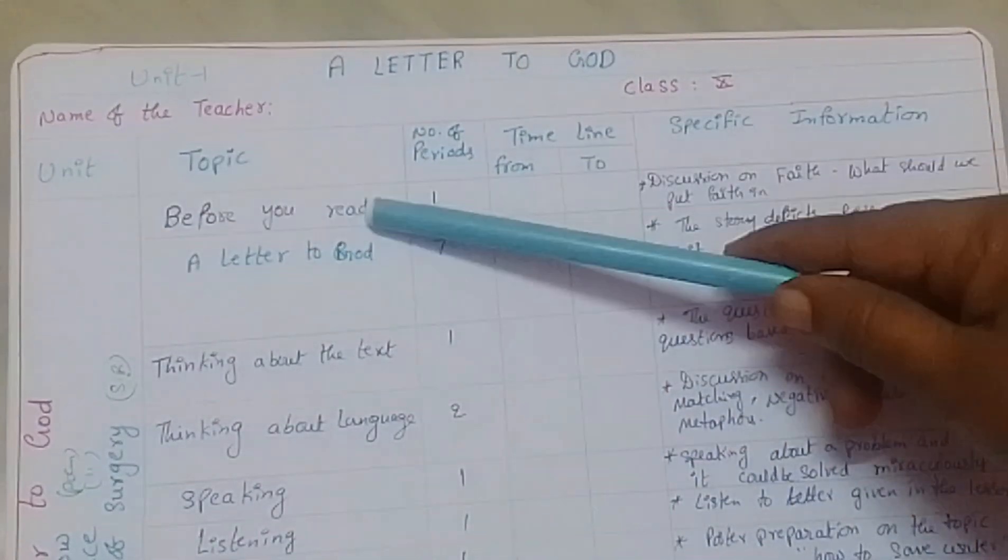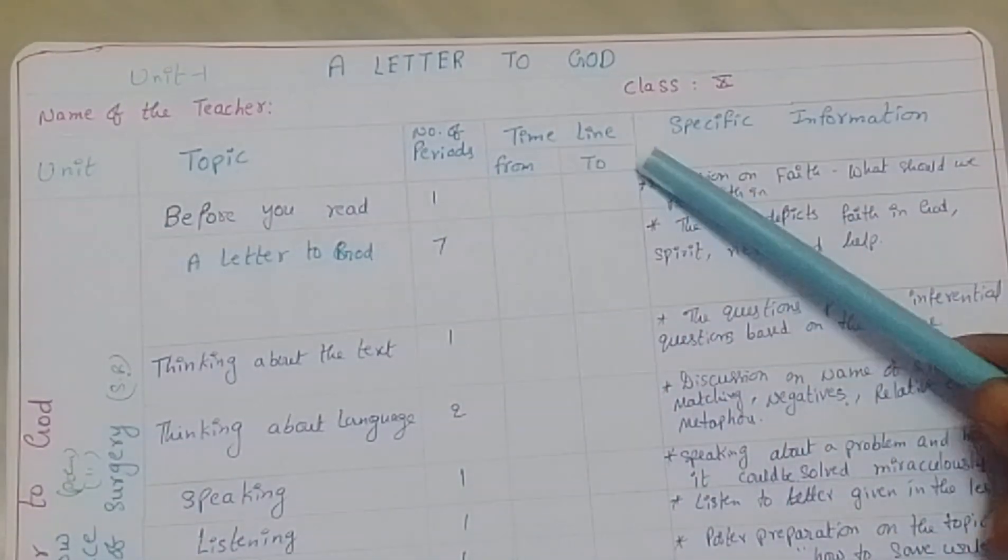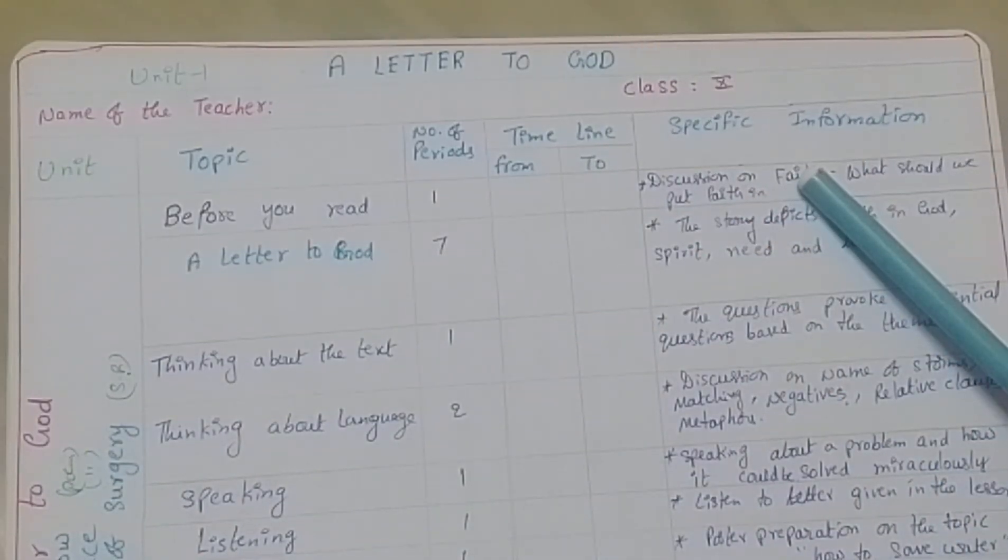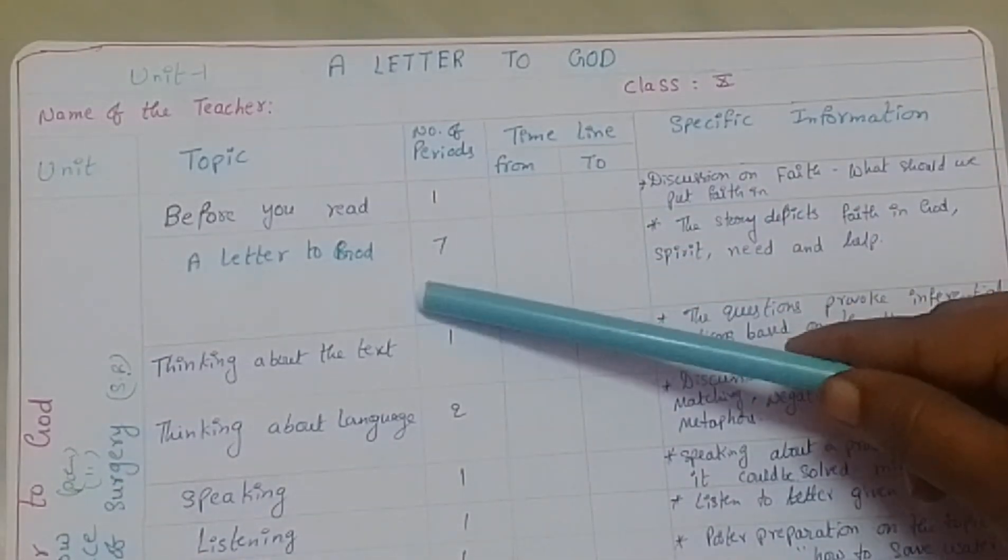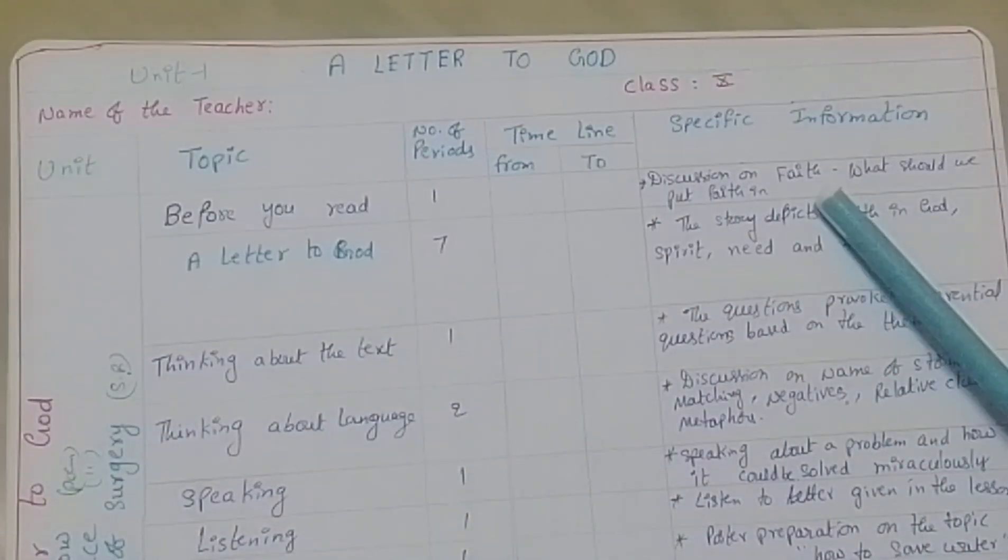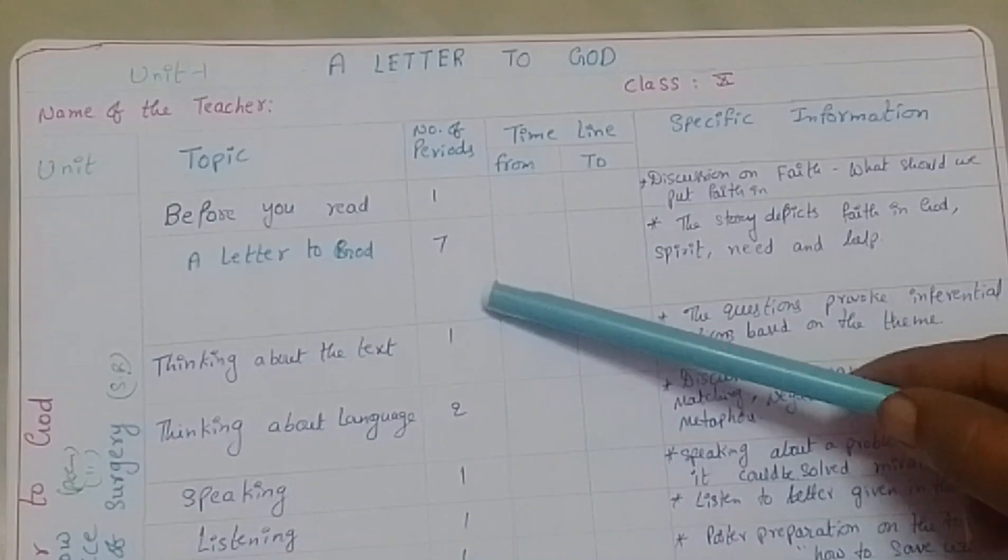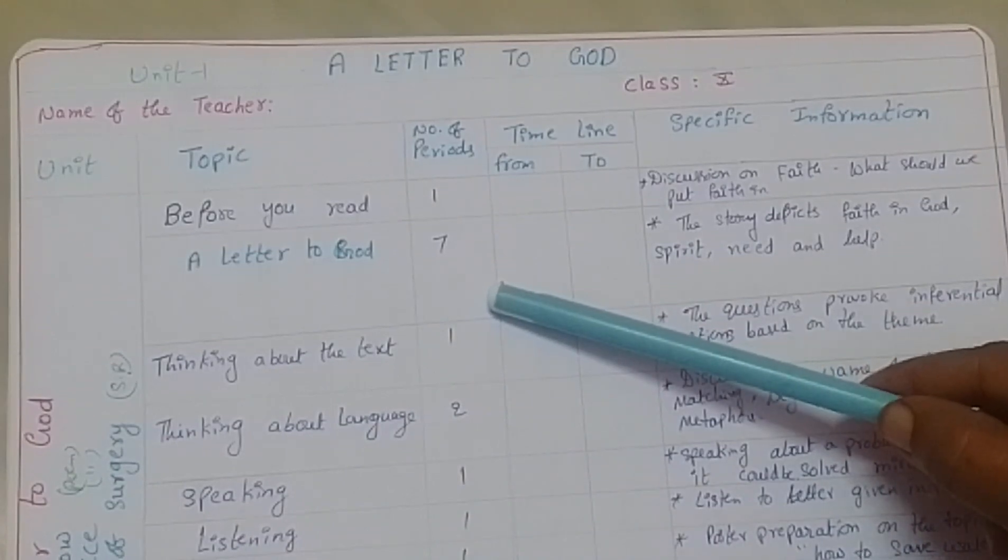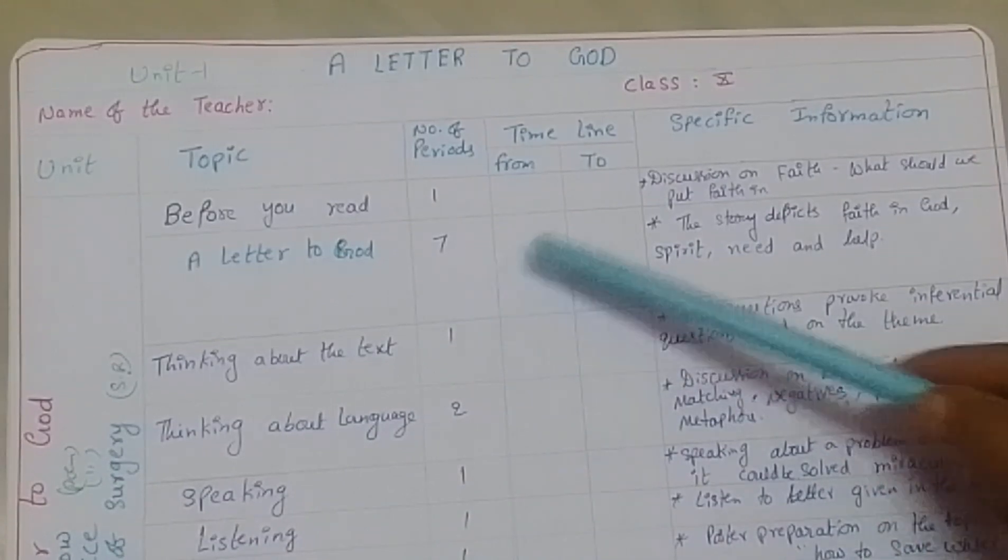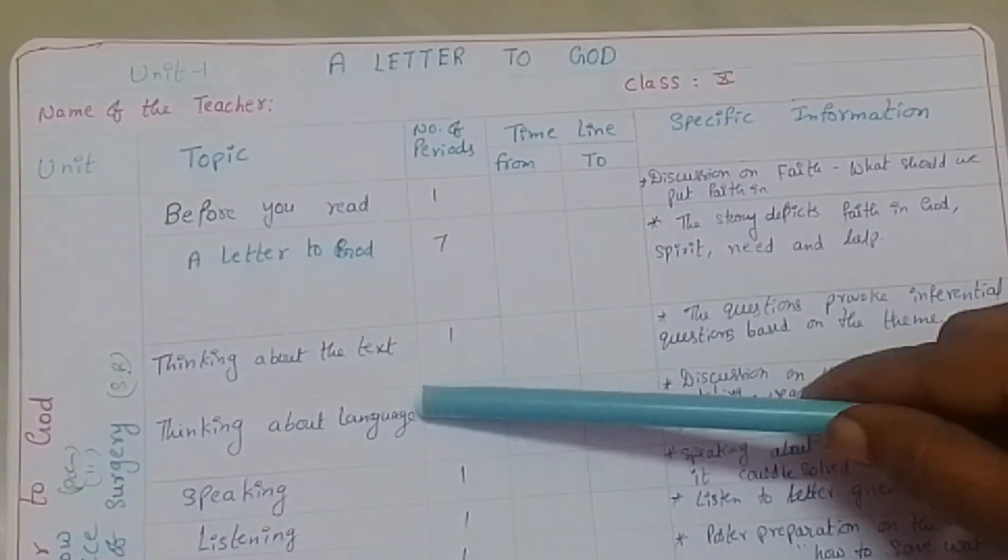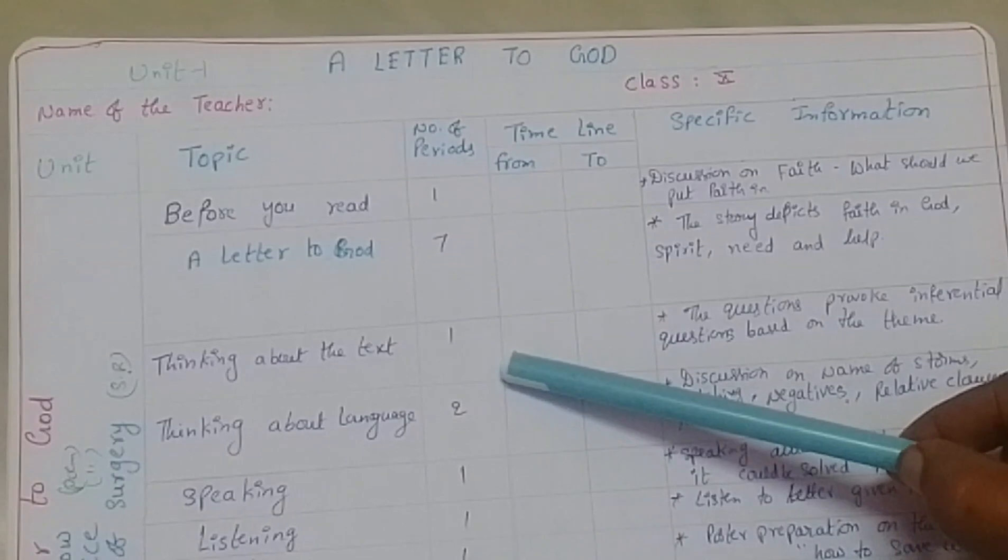The columns include unit, topic, number of periods, timeline from and to, and specific information. Before you read, we need one period for discussion on faith - what should we put faith in. A Letter to God, we need seven to eight periods according to your requirement. The story depicts faith in God, spirit, need, and help.